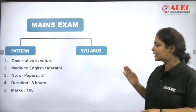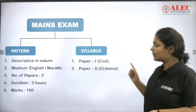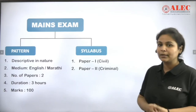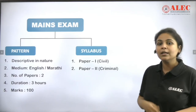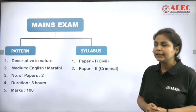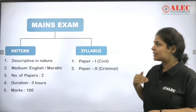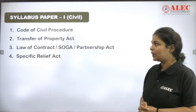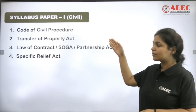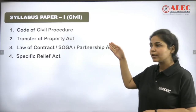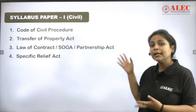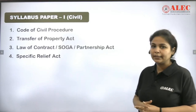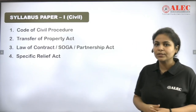Now let's look at the Mains syllabus. There will be two papers: one paper will be civil law and one paper will be criminal law. For Paper 1 — Civil Law — you will get questions from the Code of Civil Procedure, Transfer of Property Act, Contract (including Sales of Goods and Partnership), and the Specific Relief Act. These are all civil law subjects.